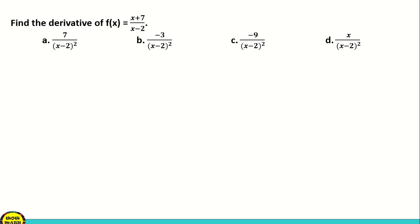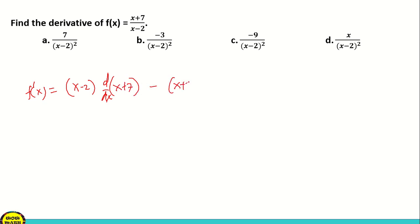Find the derivative of f of x equal to x plus 7 over x minus 2. We can use the quotient rule. So f prime of x equals: copy the denominator, then multiply by the derivative of the numerator, minus copy the numerator, multiply by the derivative of the denominator, all over the square of the denominator.